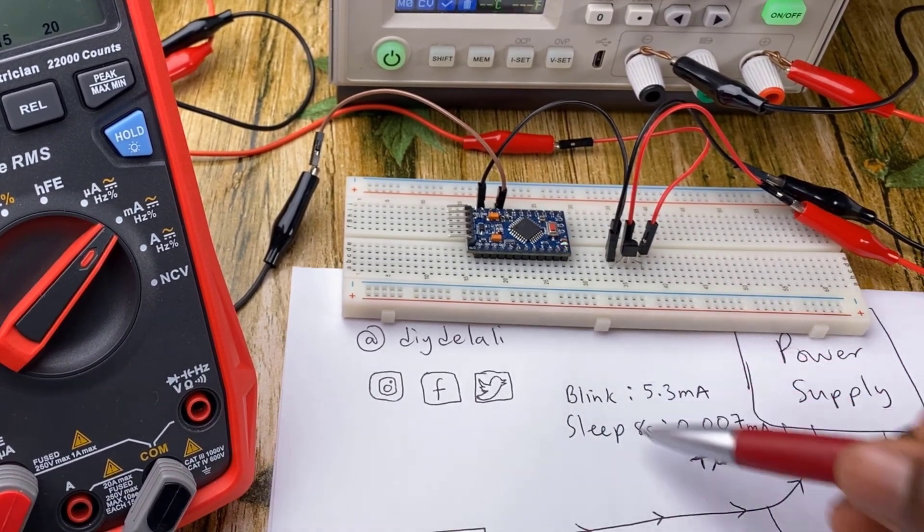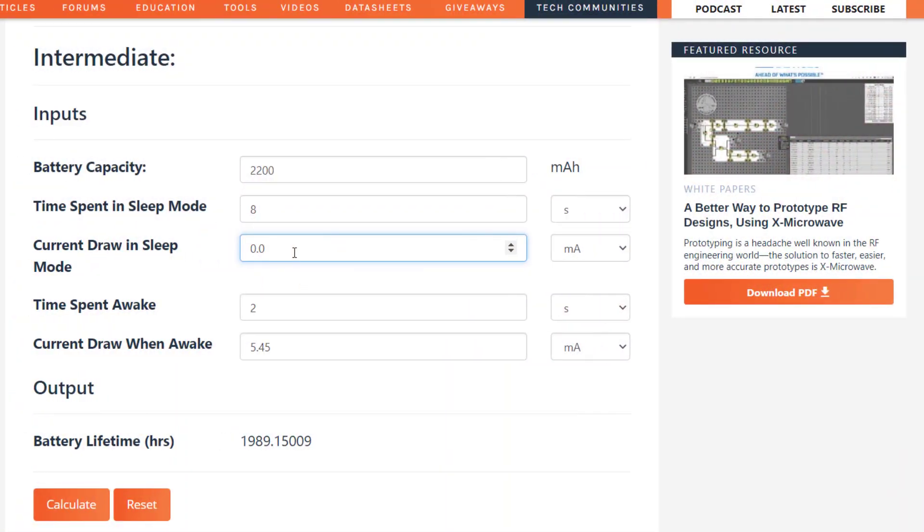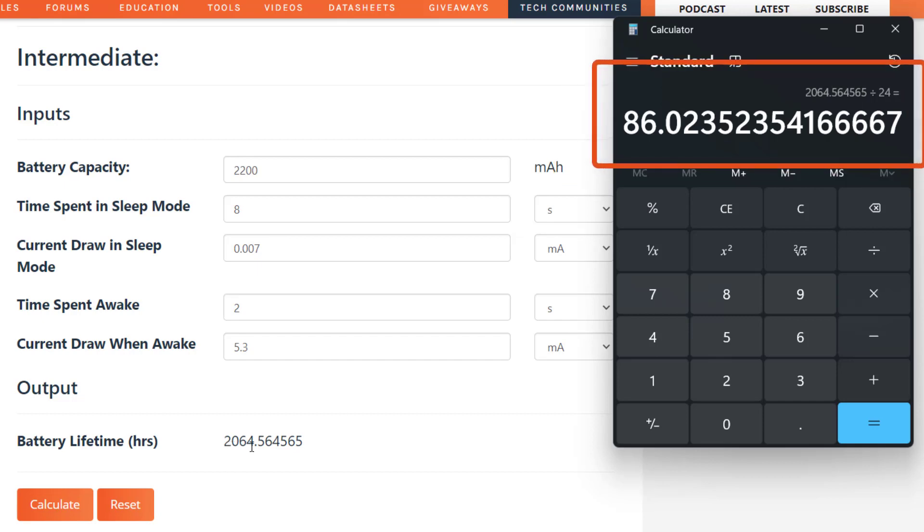Let's now put these new values into the duration calculator. Once again, over here, we will change this to 0.07 and then this went lower. So we will change it also to 5.3. And after calculation, you can see this figure moves forward even more. Further dividing this value by 24, we have 86 days, which is 3 more days than we saw previously.